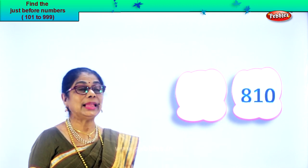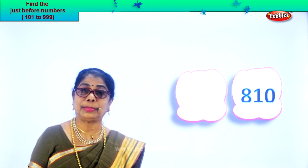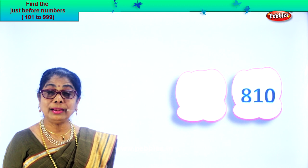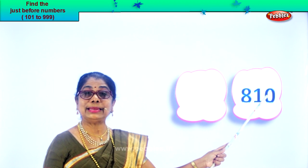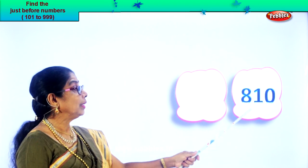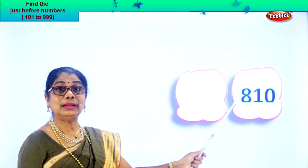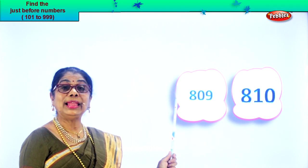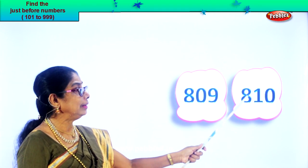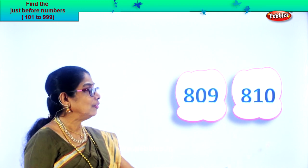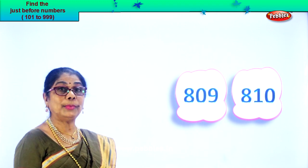Eight hundred and ten. Now in the ones place you have zero, so let's take the two numbers together. In the tens place you have one, and that is ten. What is one less than ten? One less than ten is nine. So it is ten here, then nine. If the nine comes here, then there will be a zero here. So what could be the number before? Eight hundred and nine. Eight hundred and nine, eight hundred and ten.